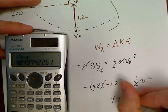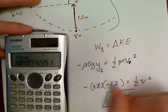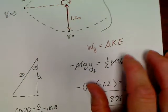4.8 meters per second would be Tarzan's velocity at the bottom of his swing.